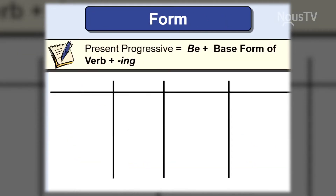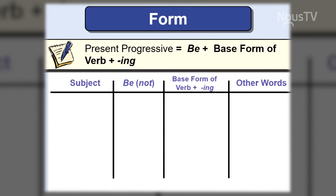So let's look at our form for the present progressive. We have the verb to be — we learned how to use the verb to be a little earlier — and the base form of the verb using -ing. So, subject plus verb to be, which can be negative or affirmative, plus the base form of the verb with -ing, and other words if necessary to make it longer.